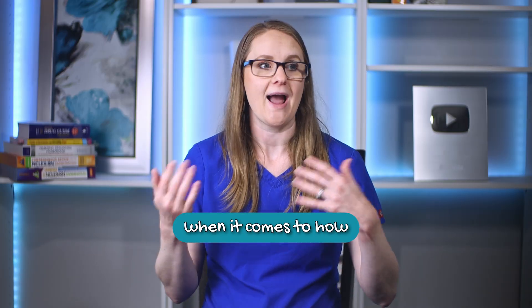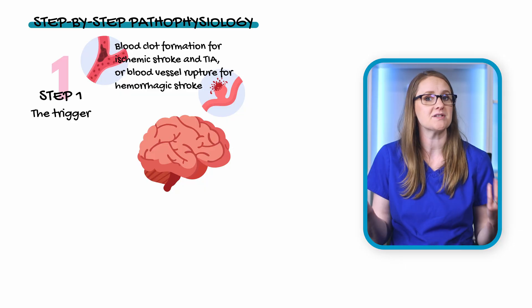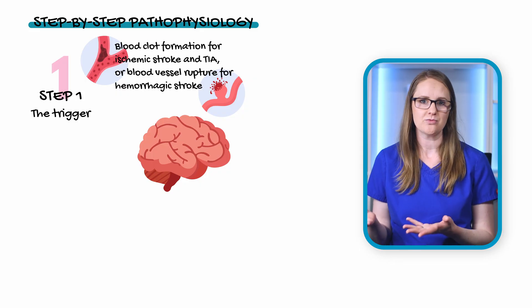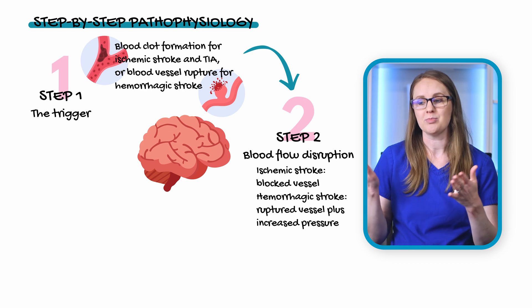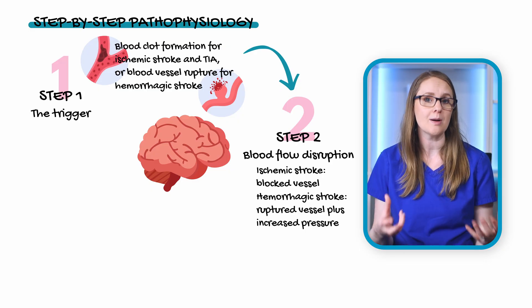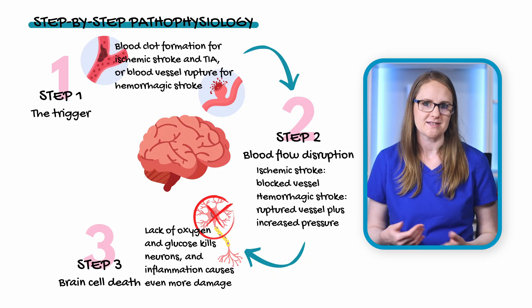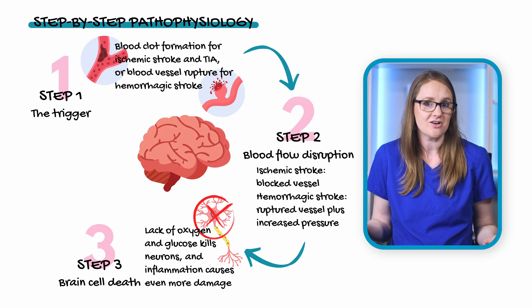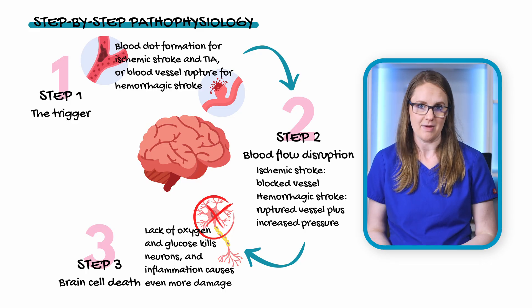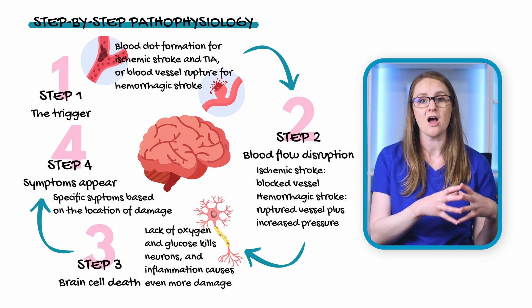Here's a simple four-step pathophysiology framework for your exams. Step one — trigger: either blood clot formation (ischemic/TIA) or blood vessel rupture (hemorrhagic). Step two — blood flow disrupted: blocked vessel for ischemic strokes, or ruptured vessel plus increased intracranial pressure for hemorrhagic strokes. Step three — brain cell death: lack of oxygen and nutrients kills neurons, and inflammation causes further damage. Step four — symptoms appear, based on the location of the stroke and where the damage is in the brain.